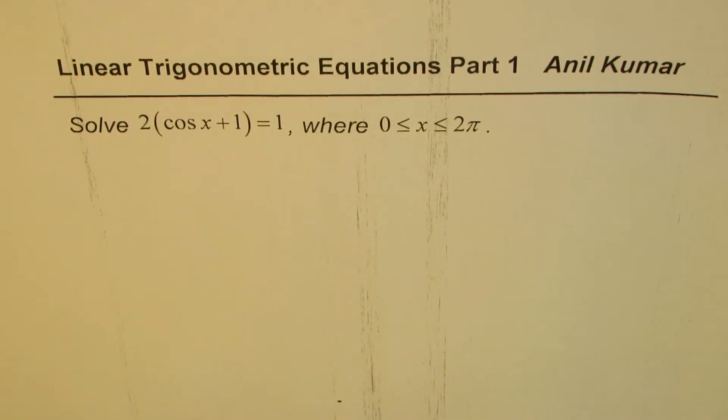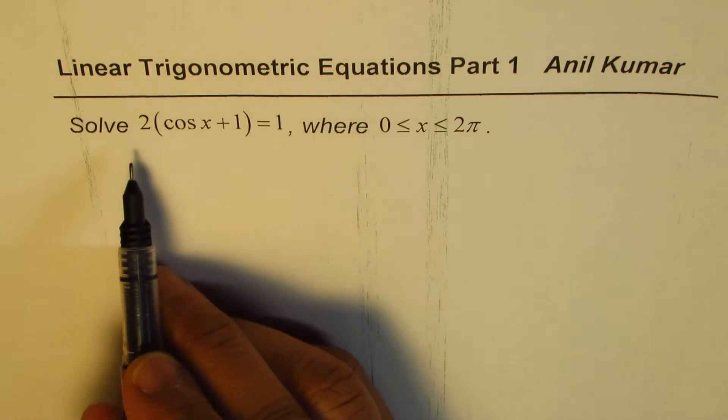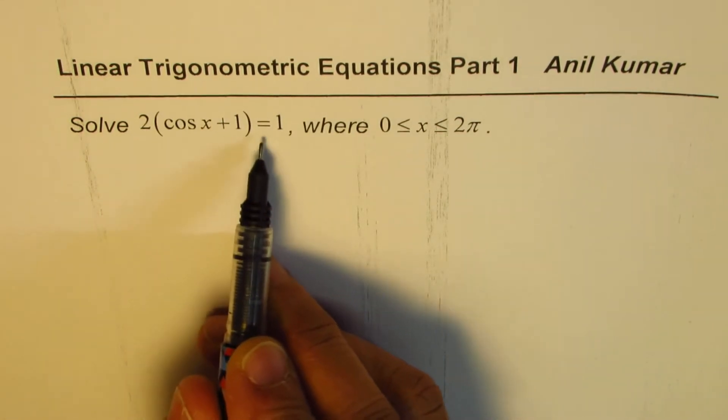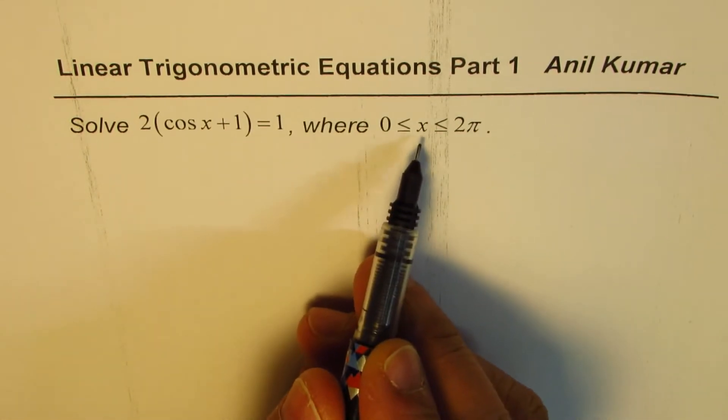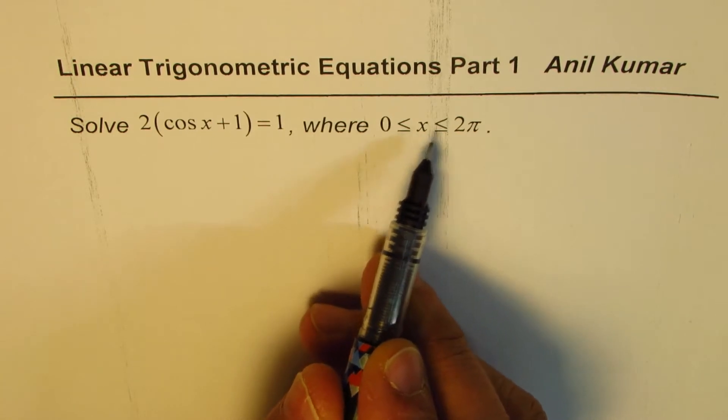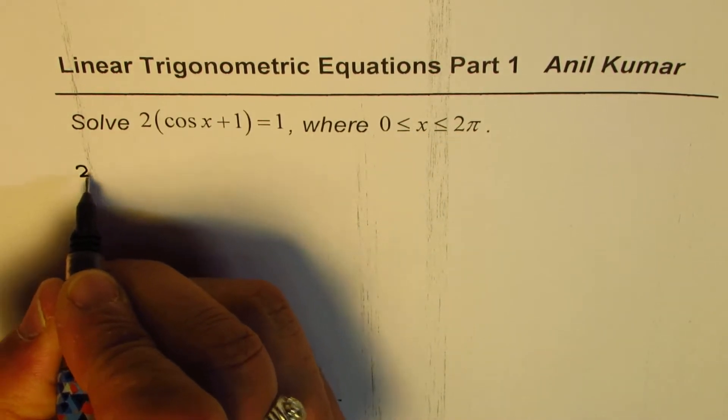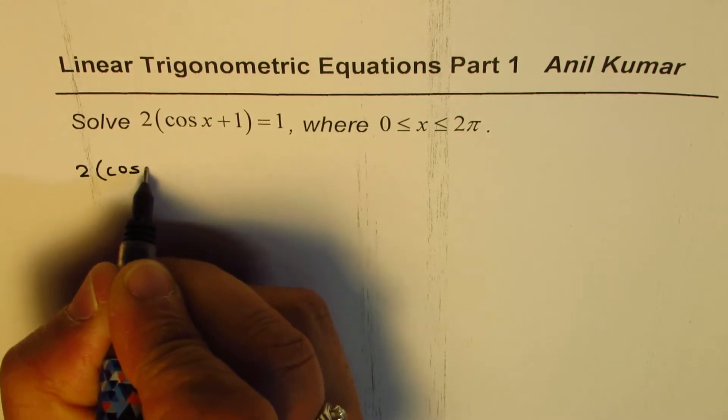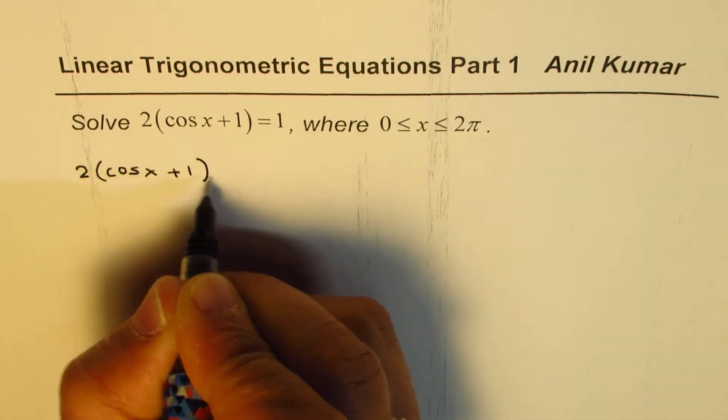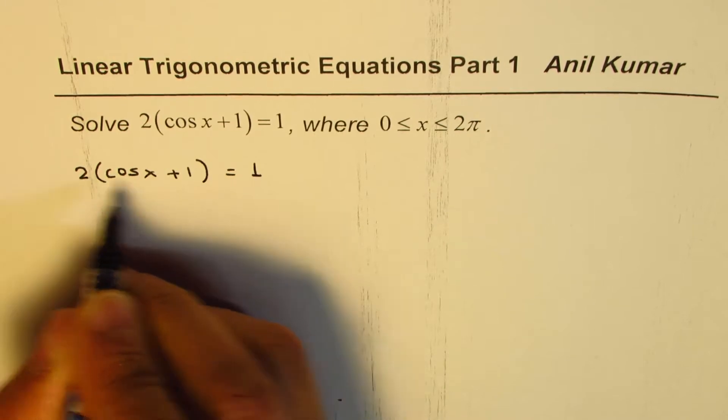I'm Anil Kumar, we are discussing how to find solutions for linear trigonometric equations. The question here is to solve 2(cos x + 1) = 1 where x is greater than or equal to 0 and less than or equal to 2π. We are given the equation 2 times cos x plus 1 equal to 1. We can divide by 2 on both sides.